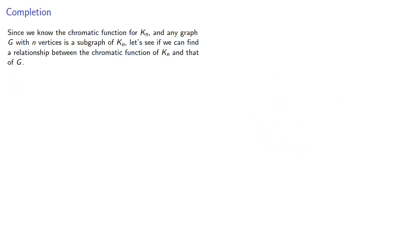Since we know the chromatic function for Kn, and any graph g on n vertices is a subgraph of Kn, let's see if we can find a relationship between the chromatic function of Kn and that of g. Since g must be a subgraph of Kn, we can build Kn by adding edges to g.